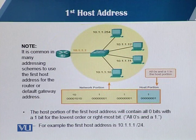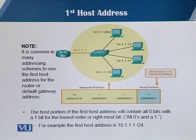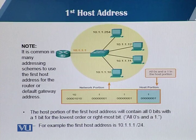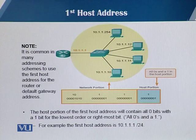It is common practice in many addressing schemes to use the first host address for the router or default gateway. The host part of the first host address contains all zero bits except for the rightmost bit, which is one. As you can see on the slide, in the host portion all bits are zero except the rightmost bit, which tells us this is the first host address.